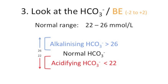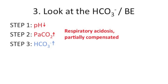The bicarbonate is your major buffering mechanism of your body's acid-base homeostasis. If it is high, it is alkalinising. If it is low, it is acidifying. In Step 3, combine it with the result from Step 2. In an example where we've already decided the problem is a respiratory acidosis, if the bicarbonate now moves in the opposite direction — here it is alkalinising — then we can say it is compensating, moving in the opposite direction.